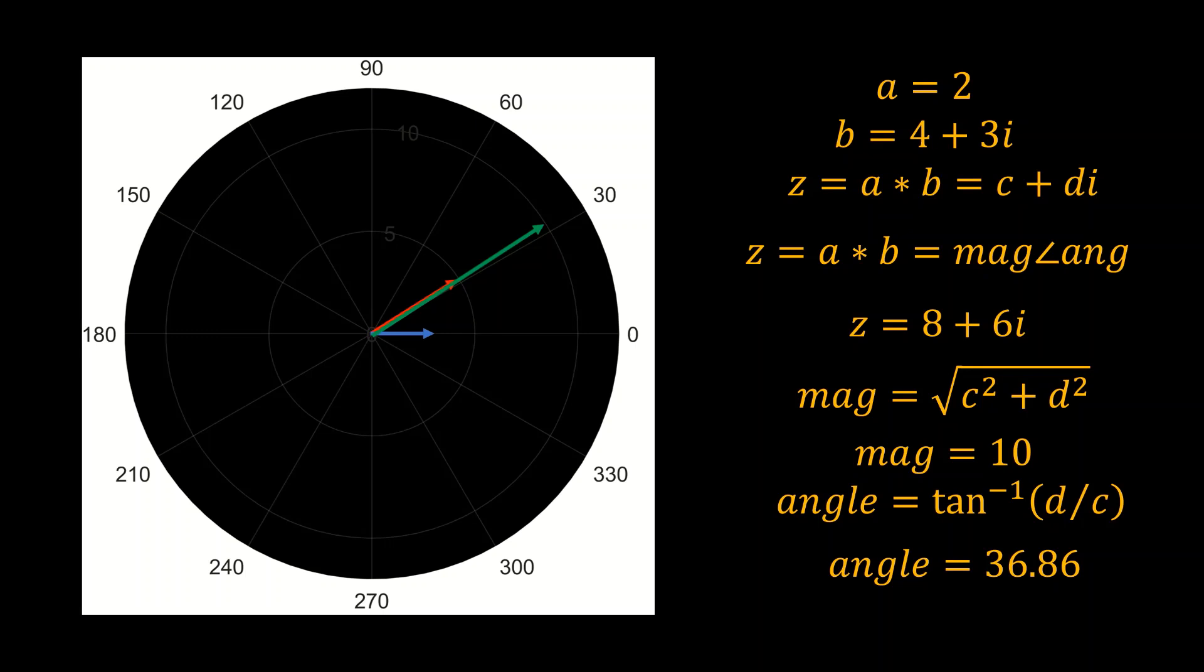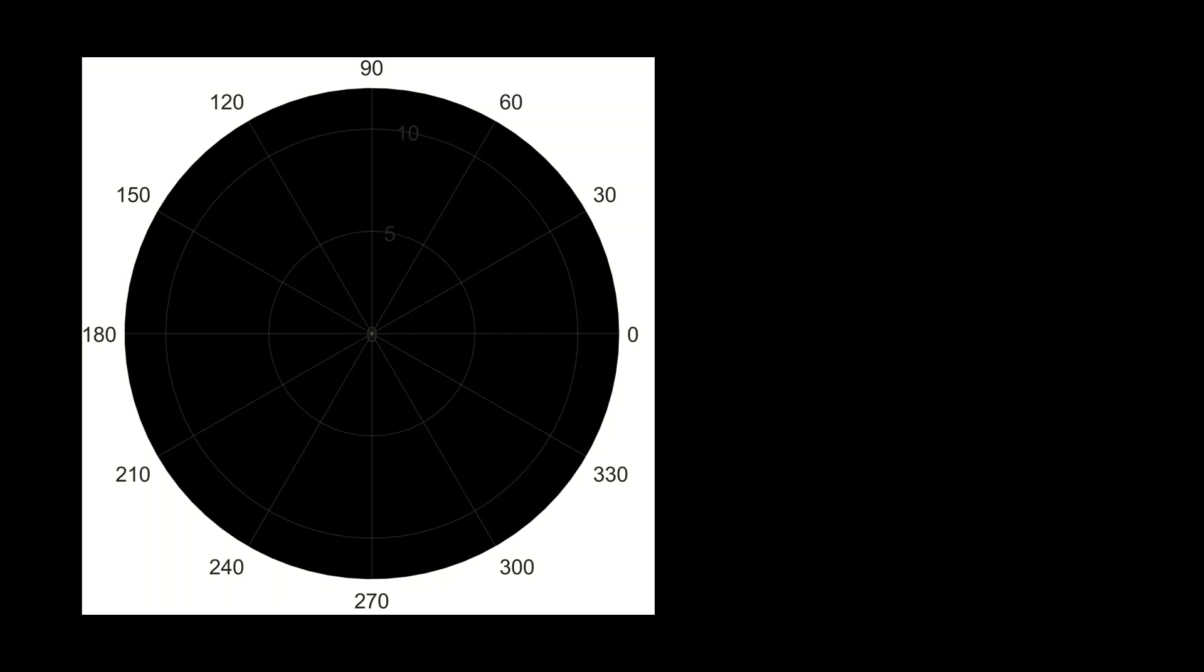So complex number is basically scaling of a real number or a complex number. If one is multiplied to another, it scales up and then rotates the number.